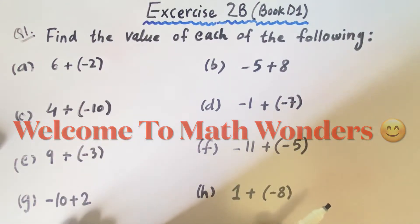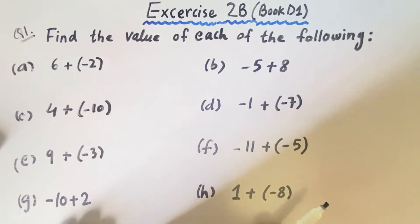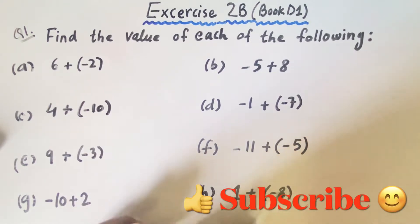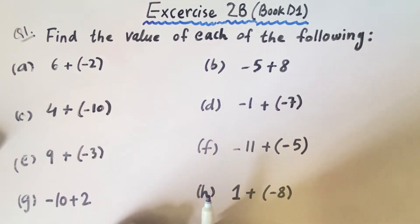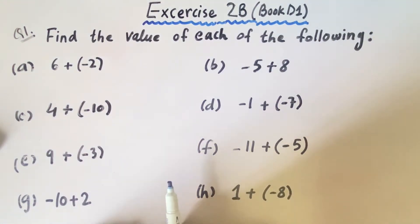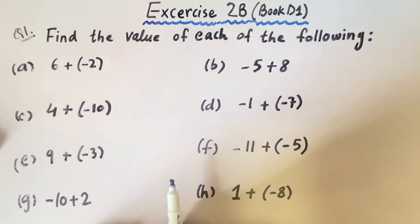As-salamu alaykum to all my dear students, how are you all? Today we are going to start exercise 2B of book D1. In this exercise we are going to deal with operational signs and positive and negative numbers, do calculation of the sign, write the answer, and find the value.